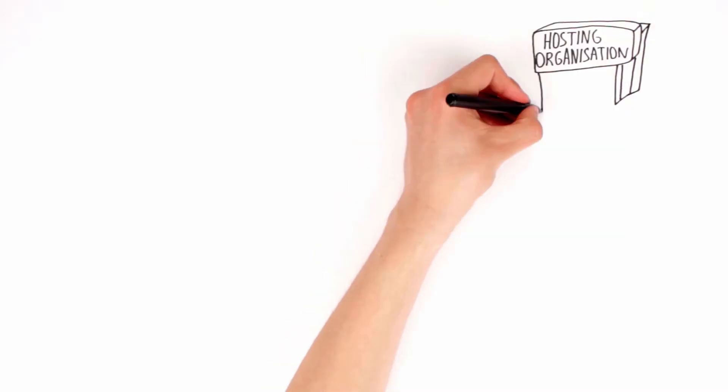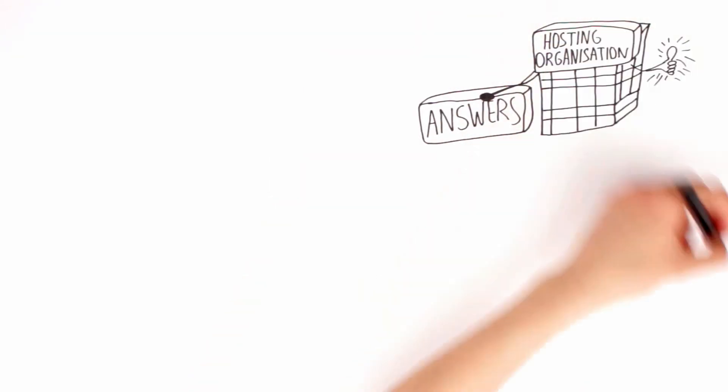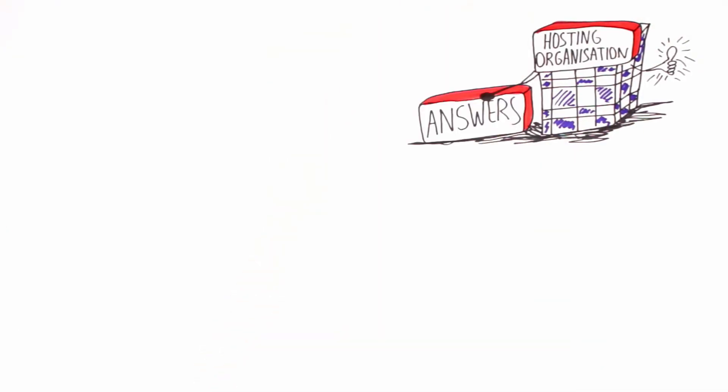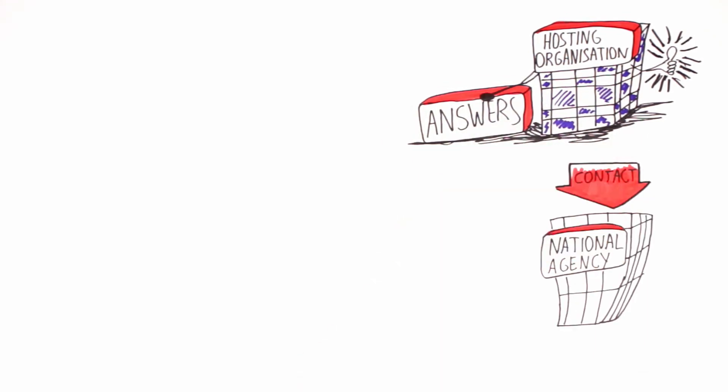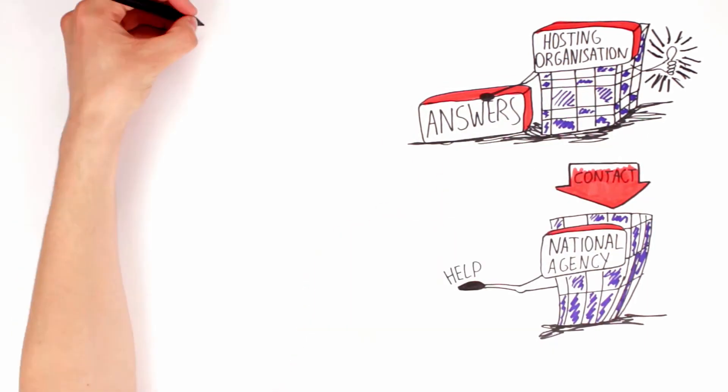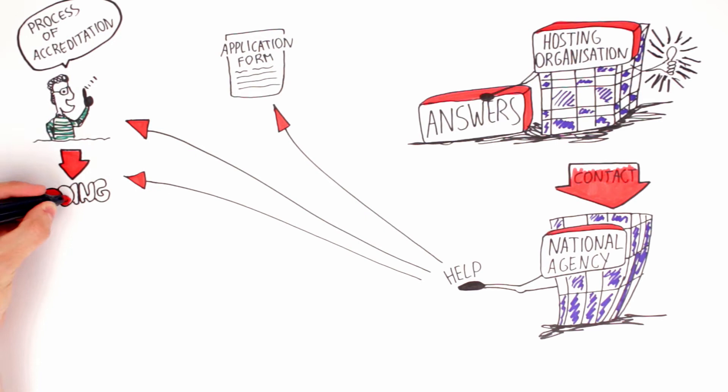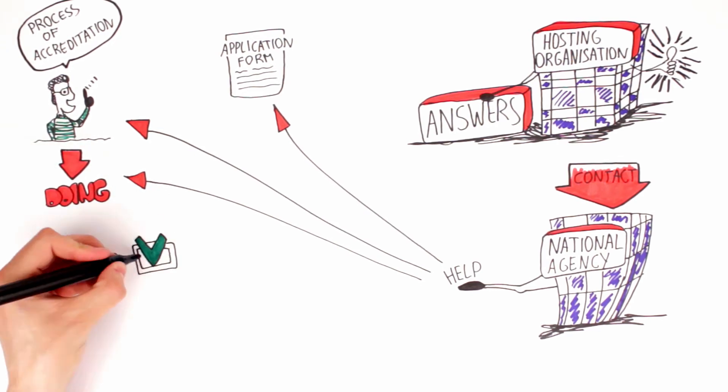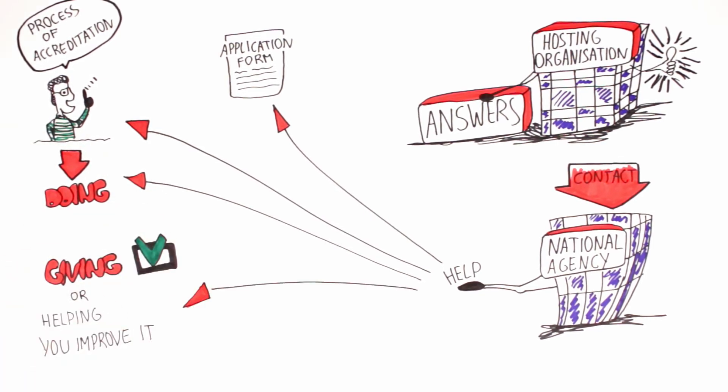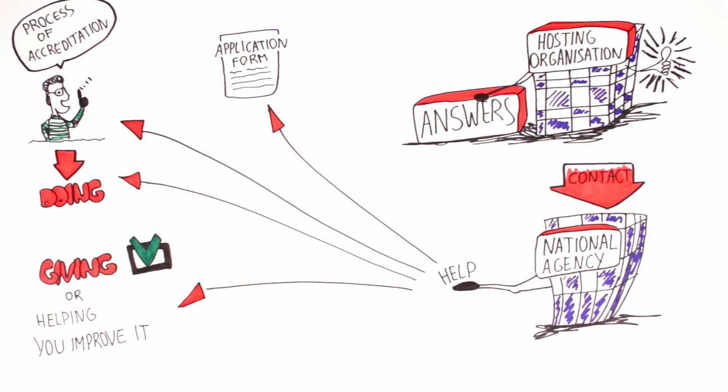Once you have answers to these questions and still feel it's the right thing for your organization, you need to contact your national agency. They will help you with the next steps which are filling in the application form, explaining the process of accreditation, doing the accreditation, giving a positive answer or helping you improve it.